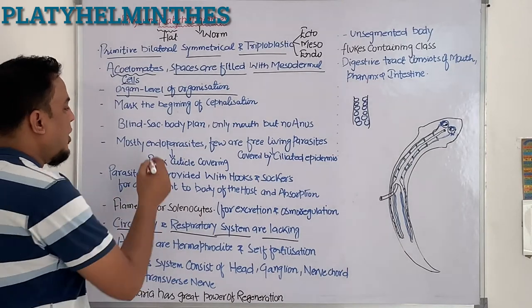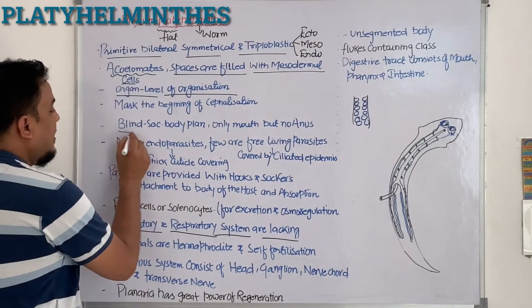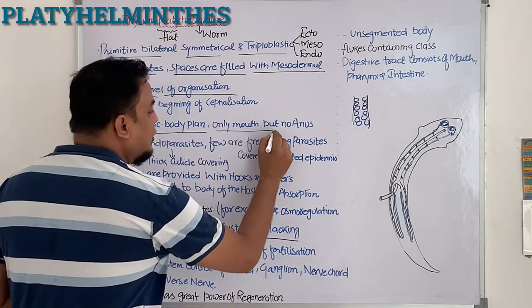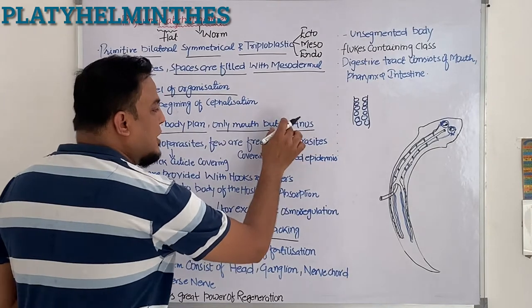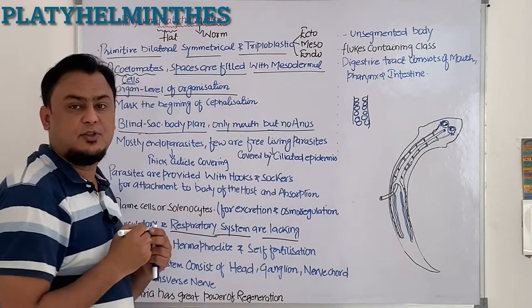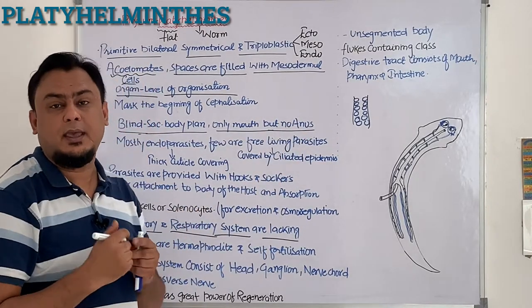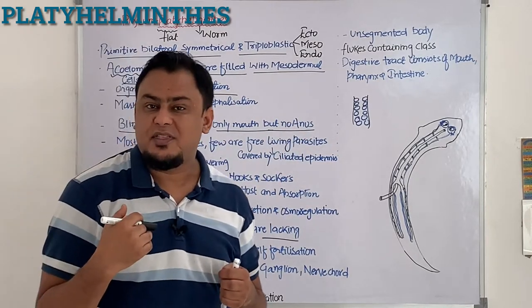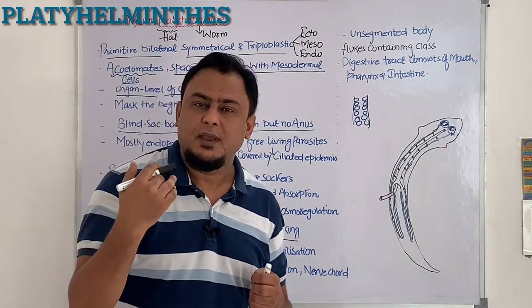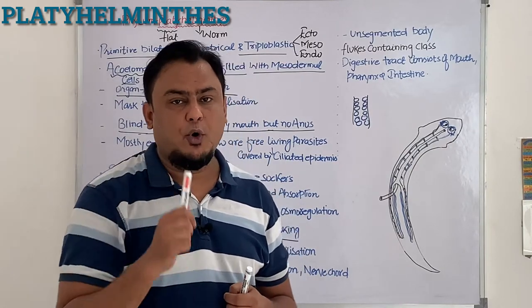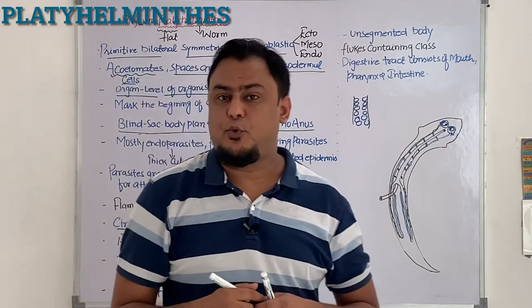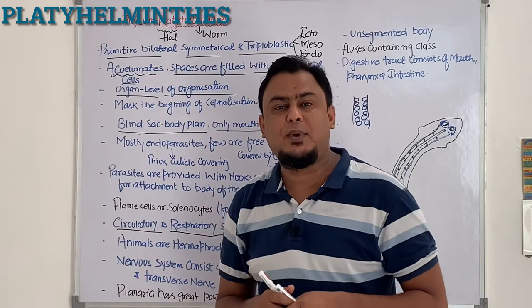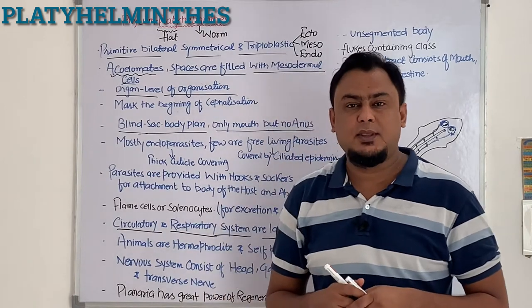Blind sac body plan means only a mouth but no separate anus. So ingestion happens through the mouth and egestion also happens through the mouth.